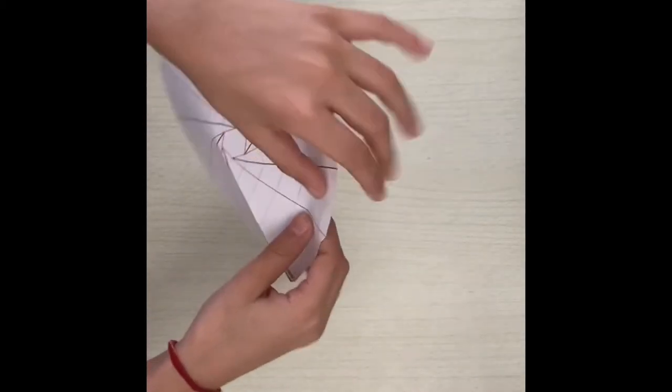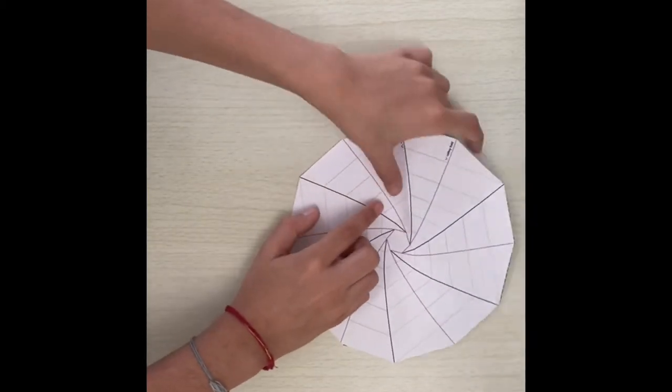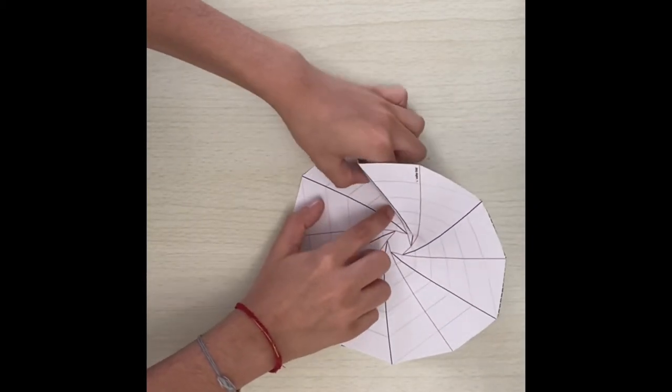Then these red lines, you want to valley fold on them, so they basically fold in the opposite direction. That's it.